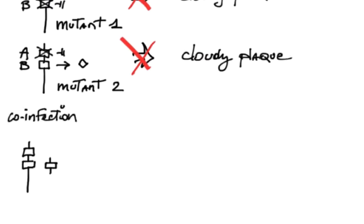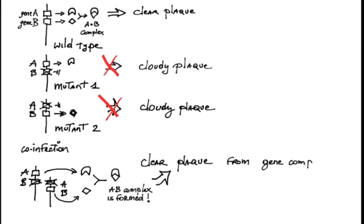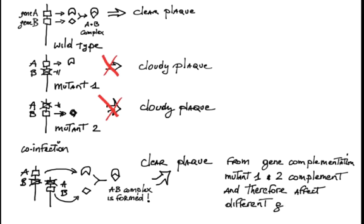If these two mutants co-infect the same cell, both A and B proteins are produced, resulting in the clear plaque phenotype. This process is called complementation and demonstrates that mutant 1 and mutant 2 affect different genes.